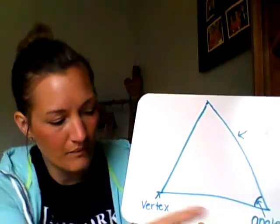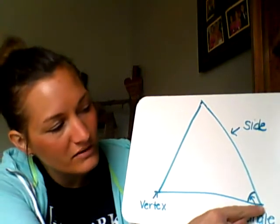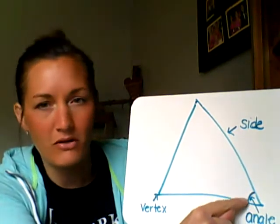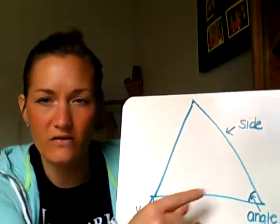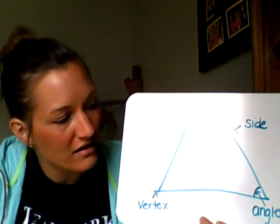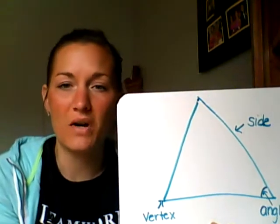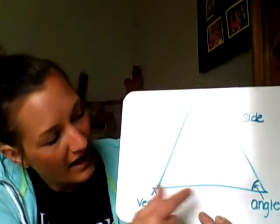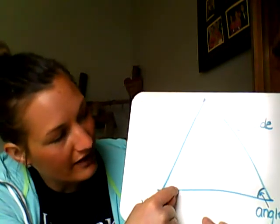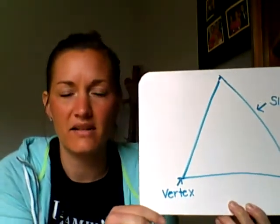The next word I keep saying is angle. An angle is when any two sides meet, they form an angle. That's this part in the middle where you see that little curved line. So when any two lines meet, they form an angle. Let's count and see how many angles a triangle would have. We have one, two, and then three. So a triangle has three angles.